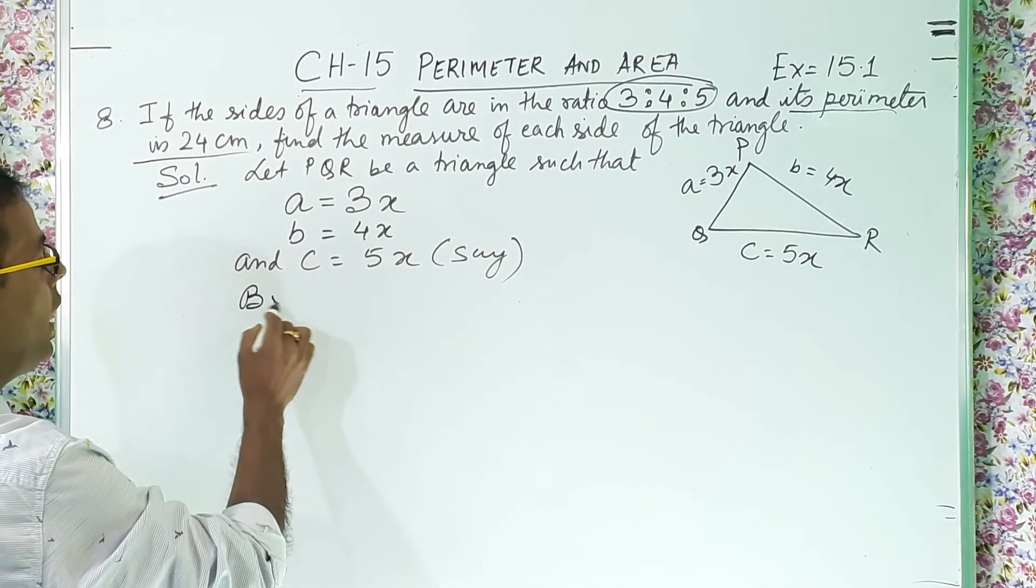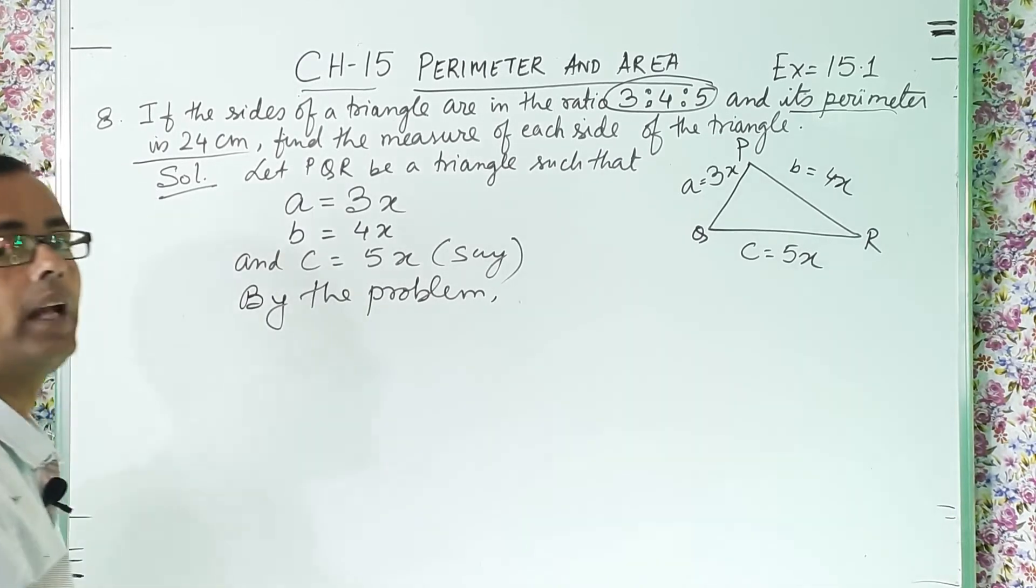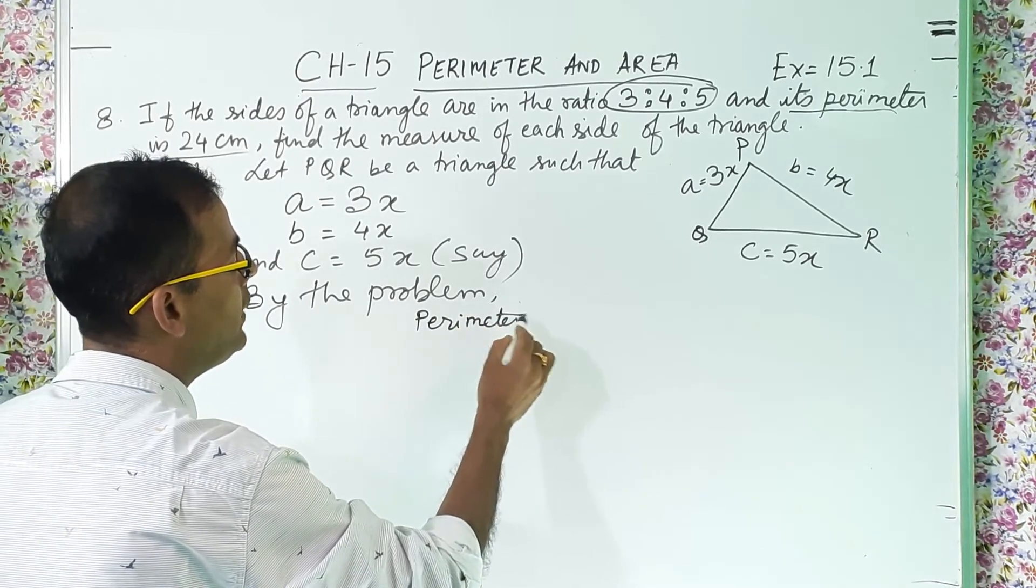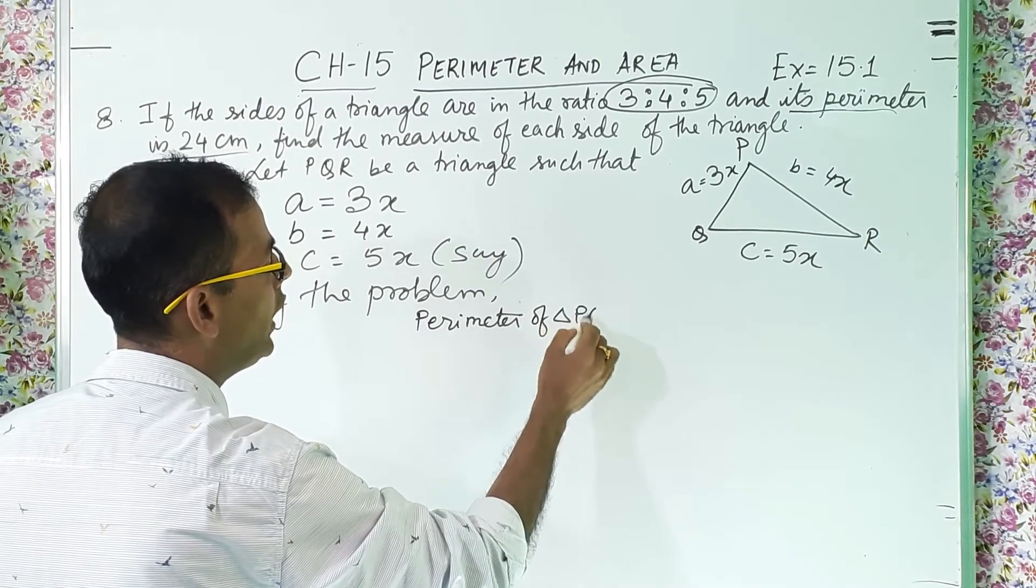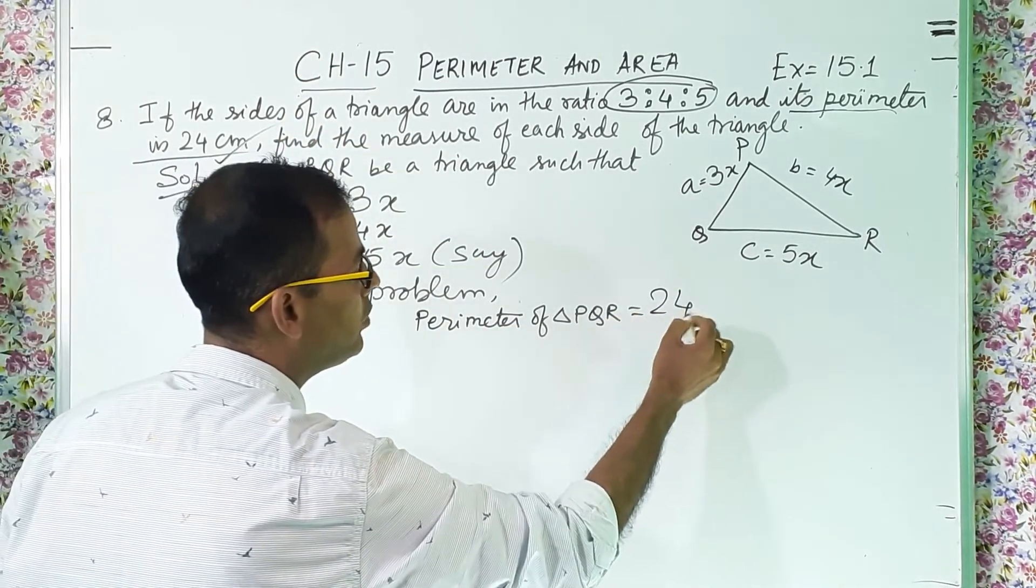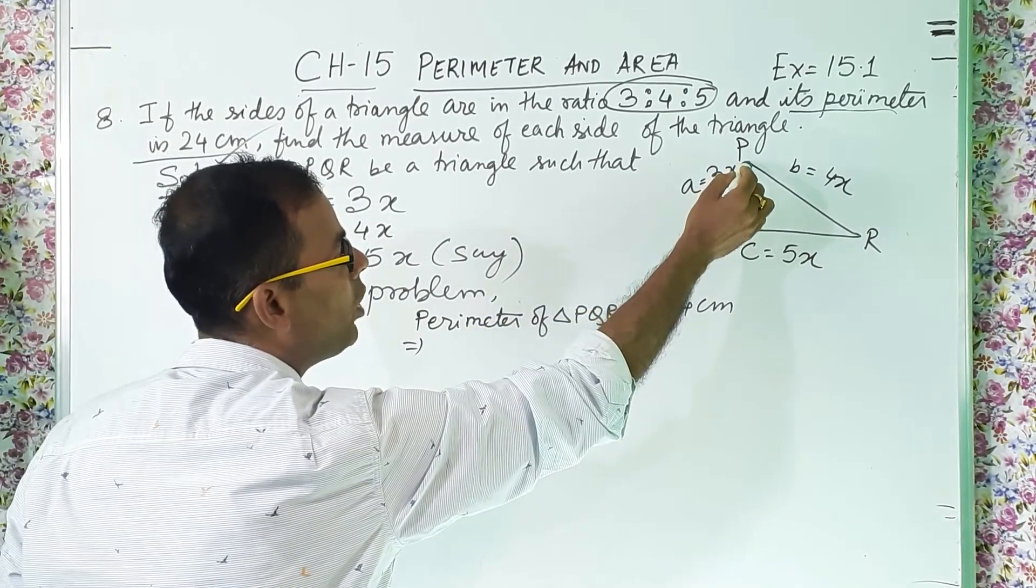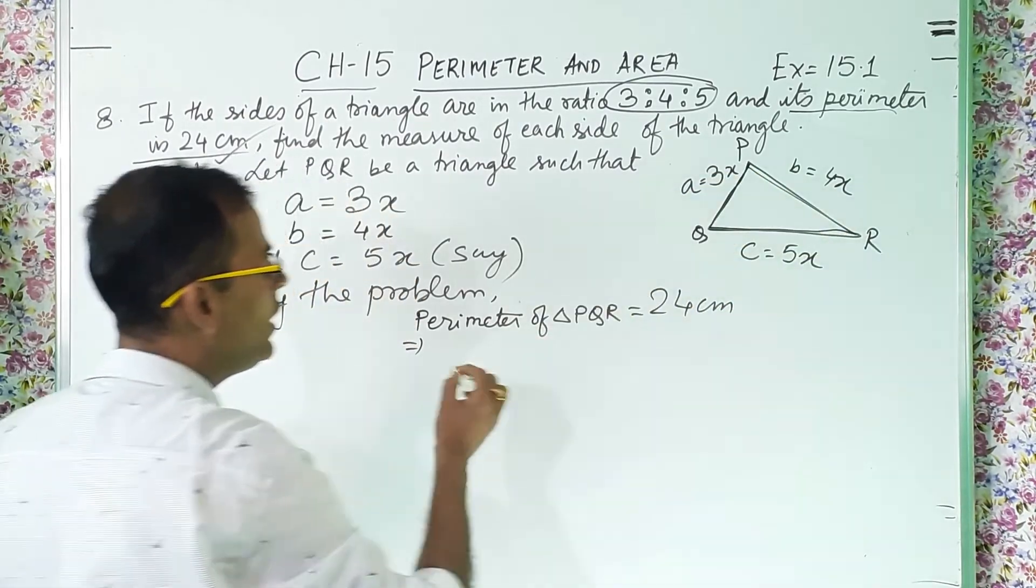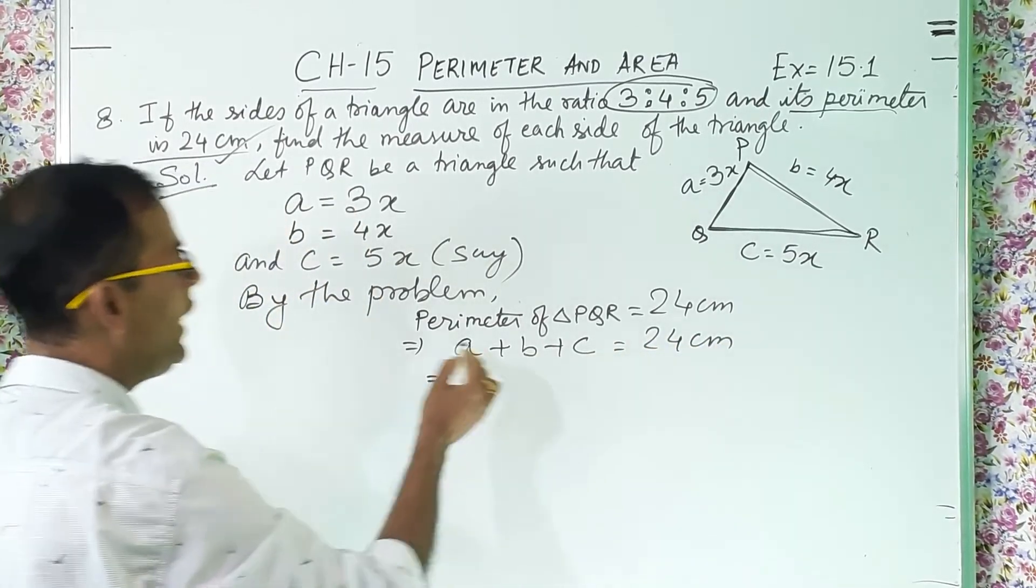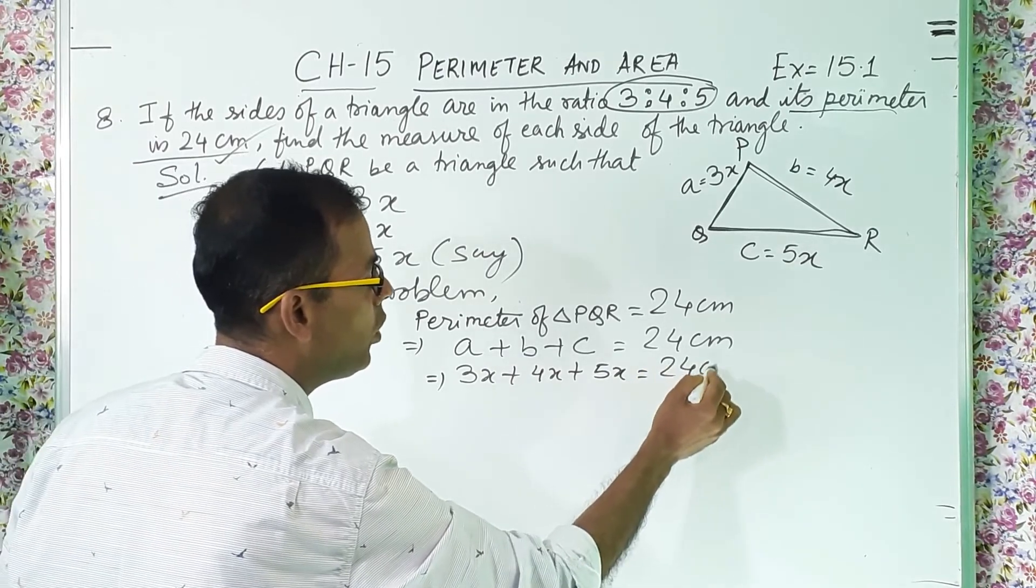So what I will write? By the problem or you can write as per question or you can write obviously also. So what? Perimeter of triangle PQR is how much? It is told 24 centimeter. And perimeter of PQR of a triangle is what? The sum of the three sides, 1, 2 and 3. So A plus B plus C equal to 24 centimeter. Now A is how much? A is 3x. B is how much? 4x. C is how much? 5x. Equal to 24 centimeter.